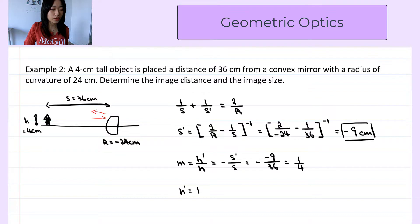That is h times m, so the image height is 4 cm times one-quarter, which equals 1 cm.